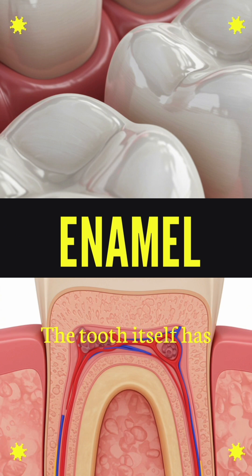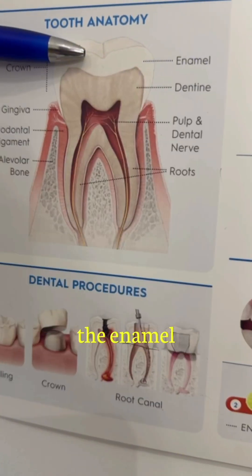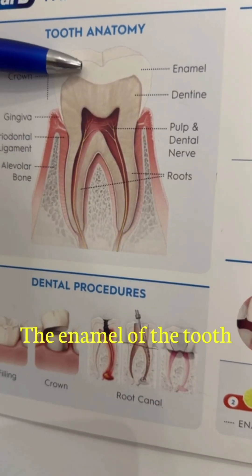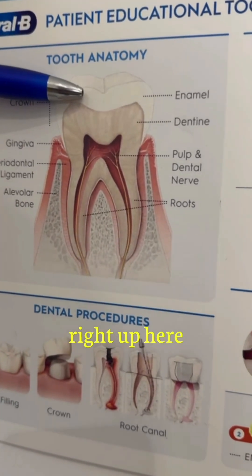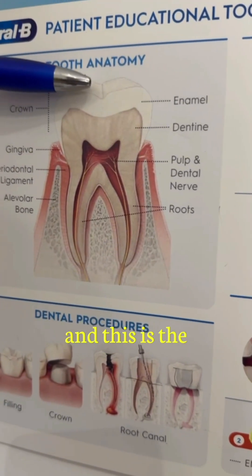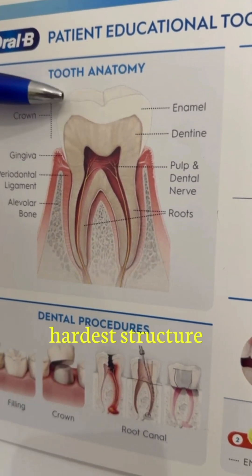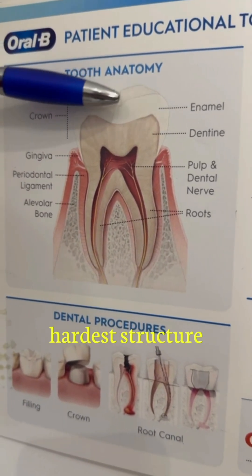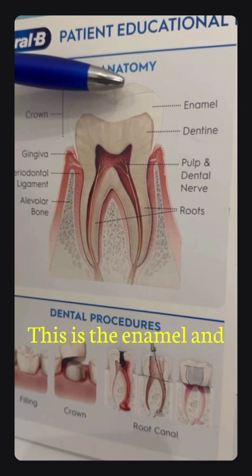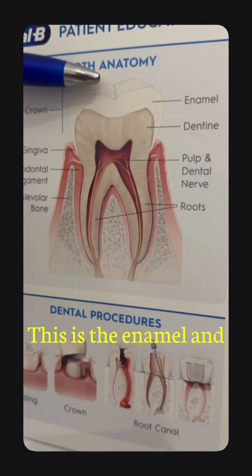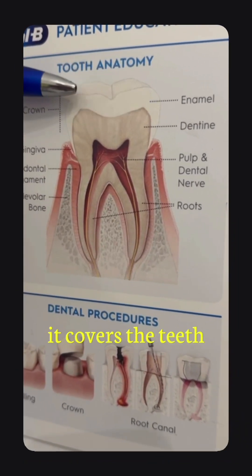The tooth itself has what we call the enamel. The enamel of the tooth right up here, and this is the hardest structure in our body. This is the enamel and it covers the teeth.